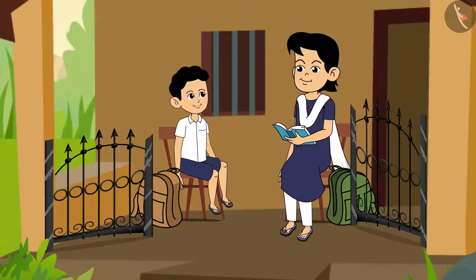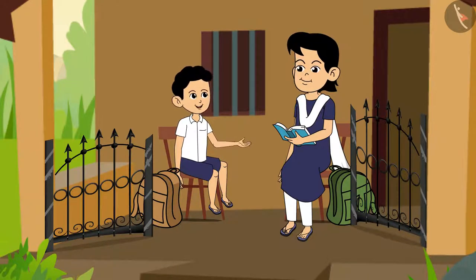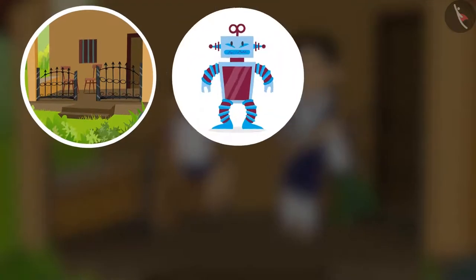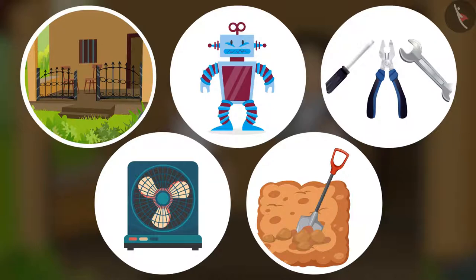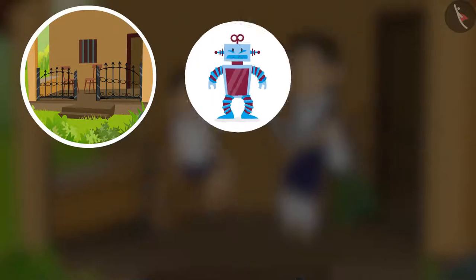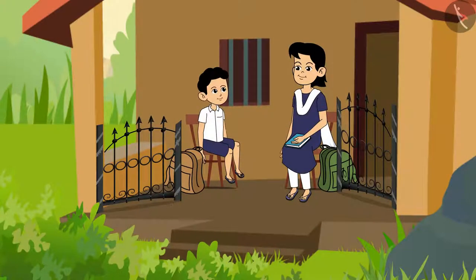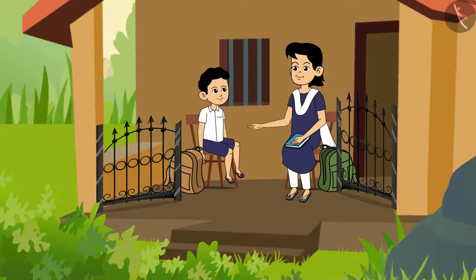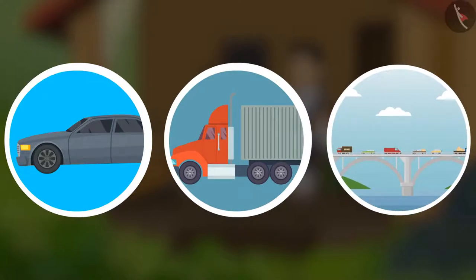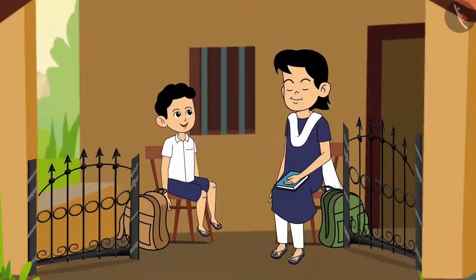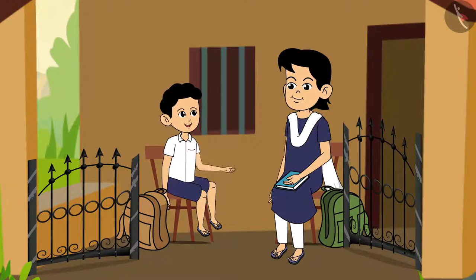Babu points out that if iron gets spoiled due to rust there is a lot of loss, since doors, toys, tools, farm machines, cars, buses, trucks, and bridges are all made of iron. Didi agrees that a great deal of damage can be caused by rust.